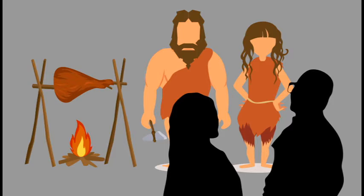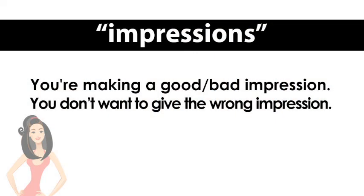So you say to your boyfriend, 'You're meeting my parents — I want you to make a good impression.' Or he says, 'I want to make a good impression, so what should I do?' Don't smoke in front of them, don't drink in front of them, dress nicely — then you can make a good impression. That's how it's used: to make a good impression, or to make a bad impression.